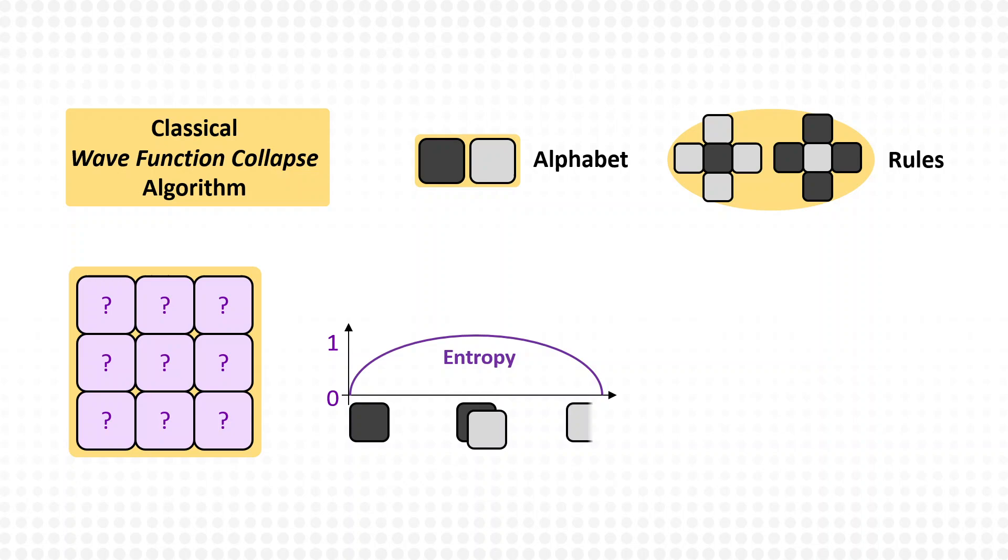The information entropy, for this case with two possible choices, depends on the probability of selecting either of the two choices—dark or bright—for an undefined tile, taking the already defined tiles and the rules into account. It becomes zero if only either a dark or a bright tile can be selected, and one if the probability of selecting a dark or a bright tile is equal. The algorithm chooses the lowest entropy.